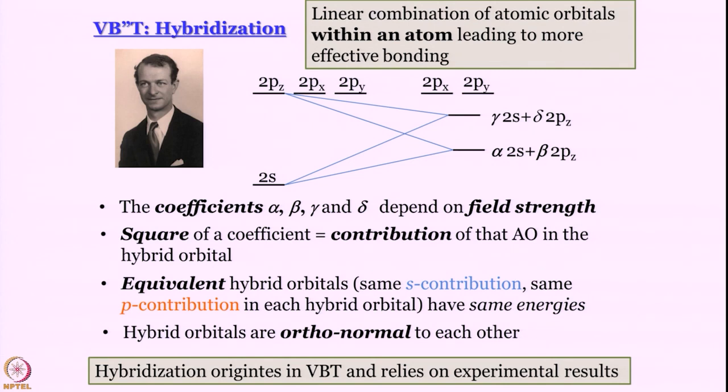In valence bond theory, hybridization is used to generate appropriately oriented orbitals. Hybridization provides directionality and that is its strength. In molecular orbital theory the strength is delocalization, and delocalization and directionality do not go hand in hand. So in MO theory it is possible to use hybrid orbitals, but that gives you a localized MO treatment which we do not prefer. Rather, we want to build a delocalized MO picture of polyatomic molecules — and the molecule we want to discuss today is methane.